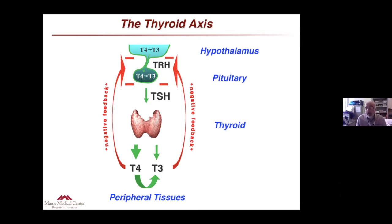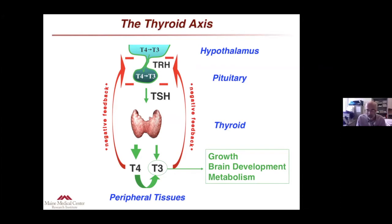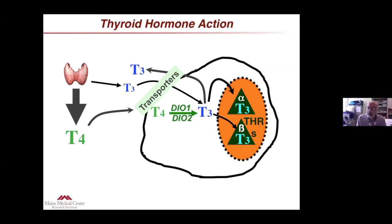Thyroid hormones have pleiotropic effects and are most remarkably known for their effects on growth, brain development, and metabolism. From the circulation they are transported into target cells by different families of transporters. Within target cells, some may feature enzymatic proteins — deiodinases one and two — that transform the pro-hormone thyroxine into the active hormone T3. This T3 can then bind to thyroid hormone receptors in the nucleus that act as transcription factors, regulating the expression of many genes and mediating the biological effects of thyroid hormones.